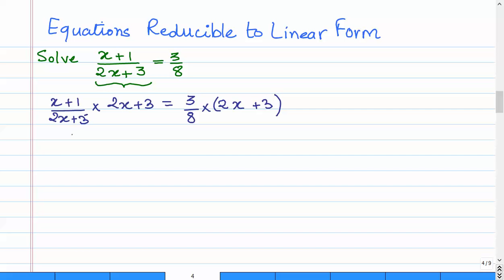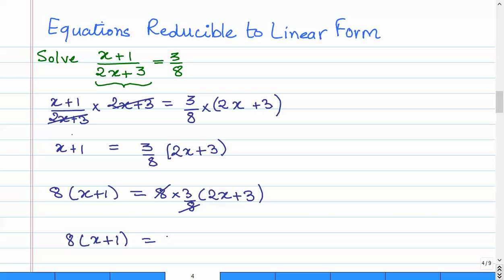This is the longer way. Now, this gets cancelled out, and we have x plus 1 equals 3 by 8 times 2x plus 3. We could also get rid of this 8 in the denominator by multiplying both the left-hand side and the right-hand side by 8. So we have 8 times x plus 1 equals 8 times 3 by 8 times 2x plus 3. Therefore, this 8 cancels out, and now we have a simple equation.